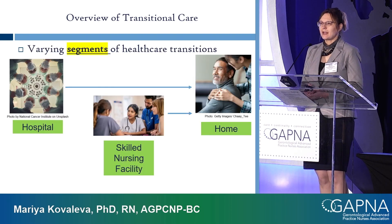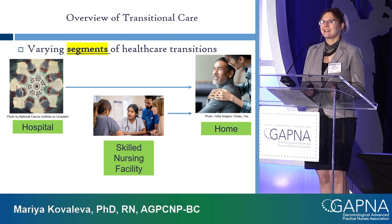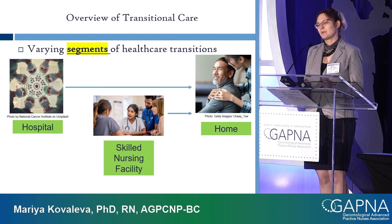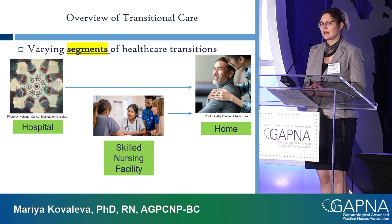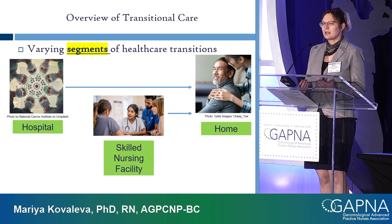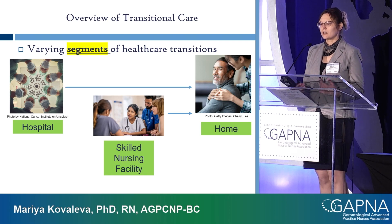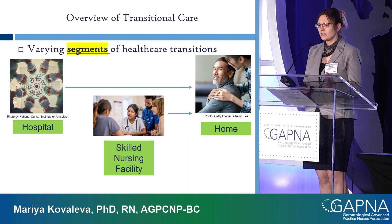Healthcare transitions are not always simple. For example, for people living with dementia, 75% go to a skilled nursing facility rather than directly home. So what seems simple becomes more complex when you look in-depth. There are various trajectories, and we need to account for all of them.